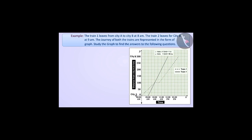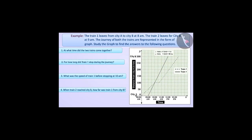Train 1 leaves from city A to city B at 8 a.m. Train 2 leaves for city B at 9 a.m. The journey of both trains is represented in the form of a graph. Study the graph to find the answers to the following questions.